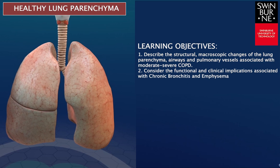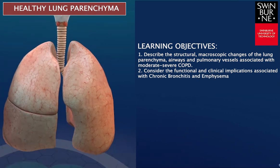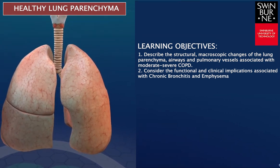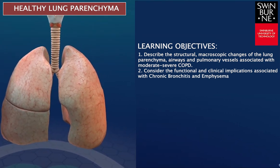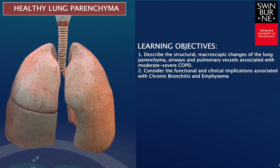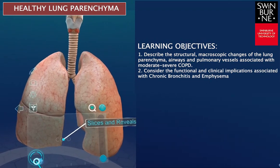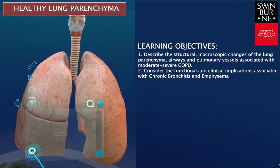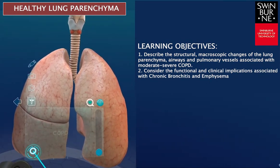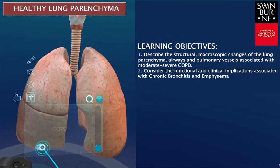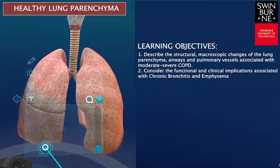All cigarette smokers have some inflammation in their lungs, but those who develop COPD have an enhanced or abnormal response to inhaling toxic agents. If we first have a look at what is considered to be the healthy lung model in VR, we can see that the lung parenchyma has that soft pink squishy appearance with no areas of destruction.